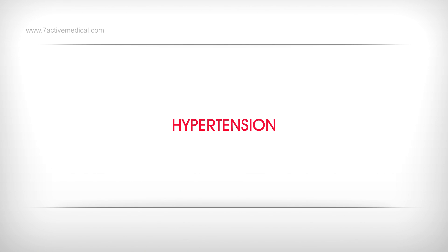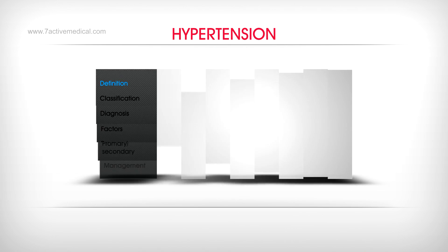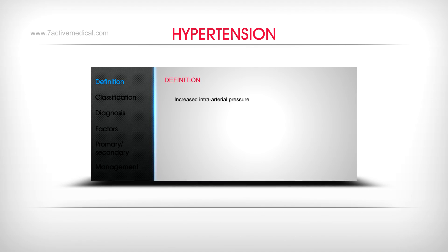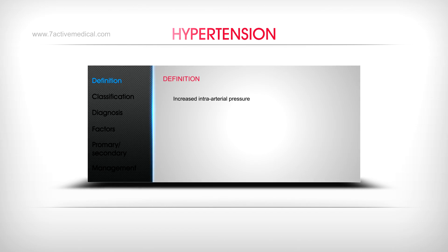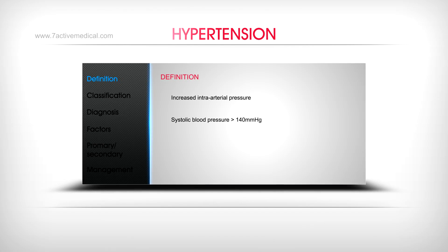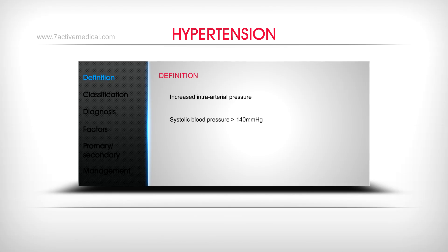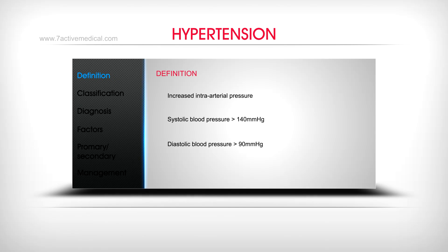Hypertension is defined as increased intra-arterial pressure, specifically a systolic blood pressure greater than 140 mmHg and a diastolic blood pressure greater than 90 mmHg.